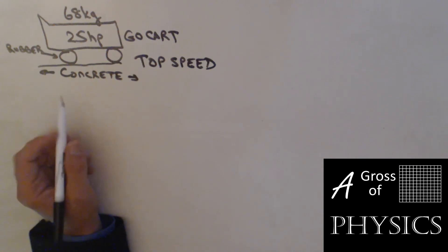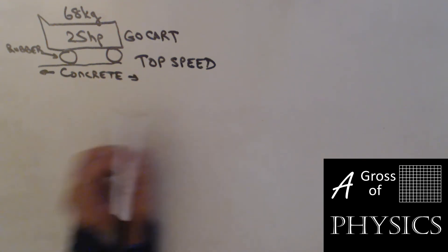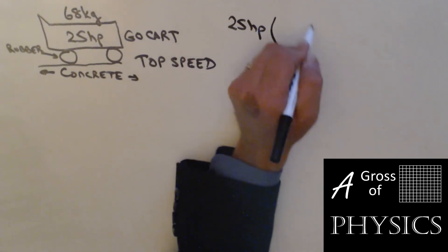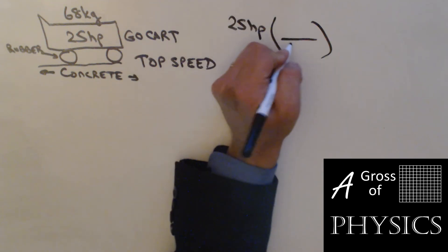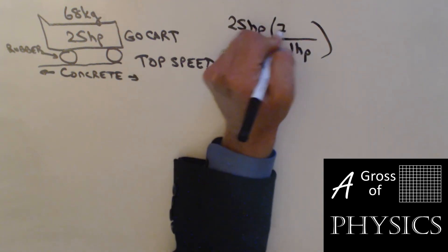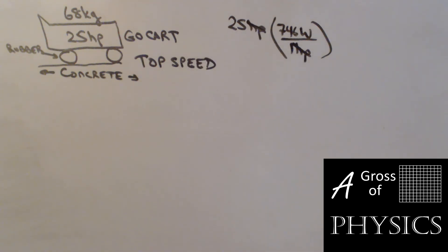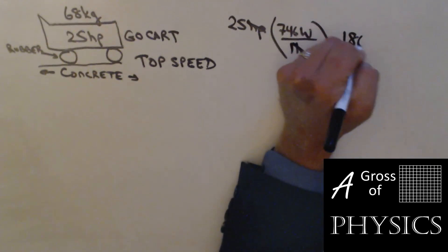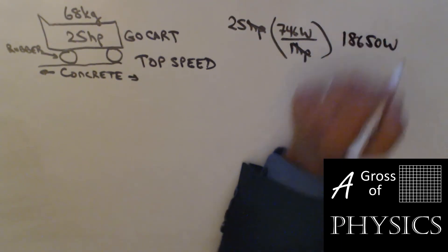This next problem involves a go-kart. It's going to move on a concrete track, and the tires are made of rubber. We have a 25 horsepower motor. 25 horsepower immediately should be converted. One horsepower is 746 watts. We get 25 times 746, and we have 18,650 watts.